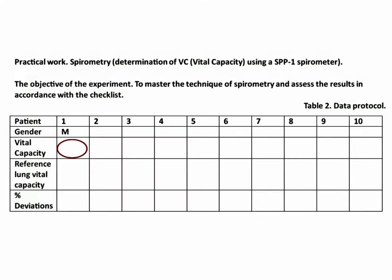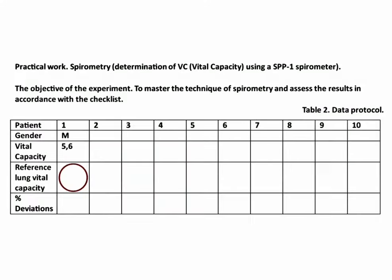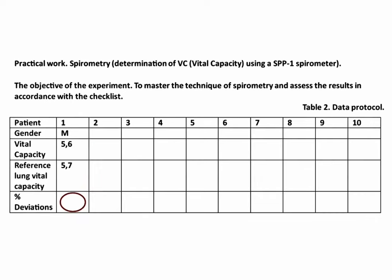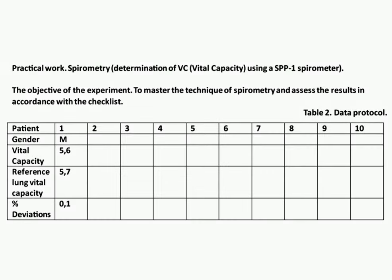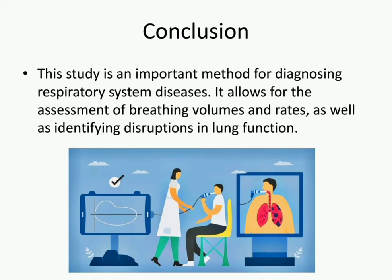Calculate the appropriate value for the green zone using a table, nomogram, or peak flow calculator. Conclusion: Spirometry is an important method for diagnosing respiratory system diseases. It allows for the assessment of breathing volumes and rates, as well as identifying disruption in lung function.